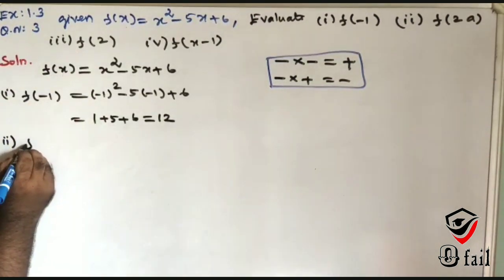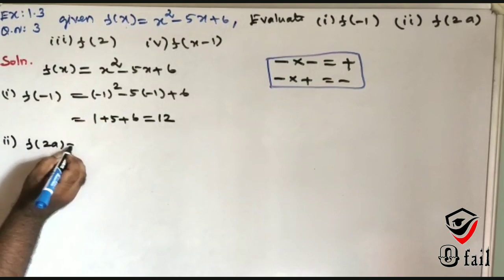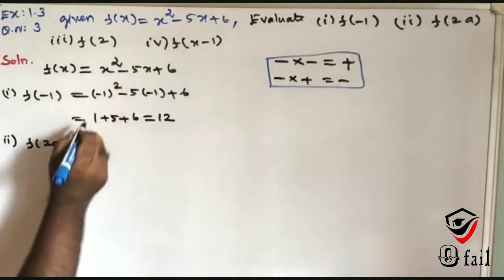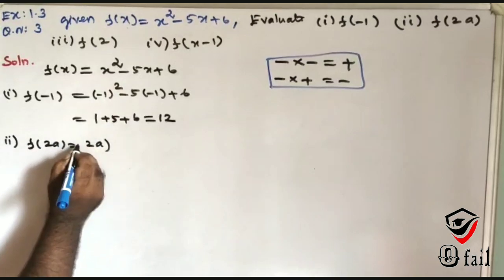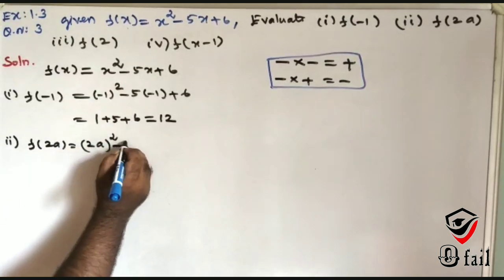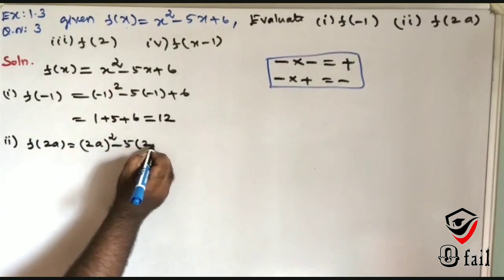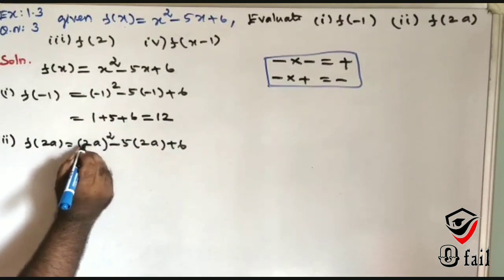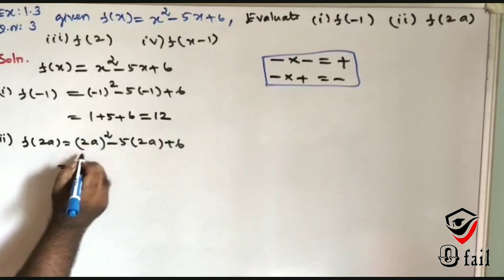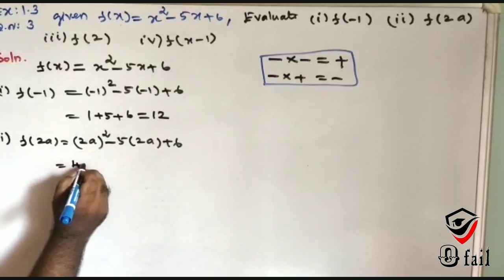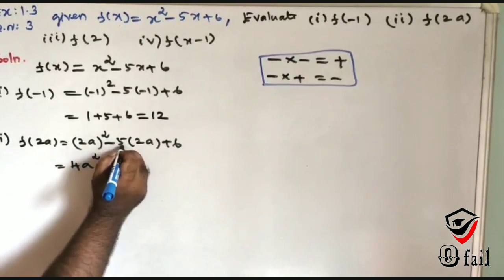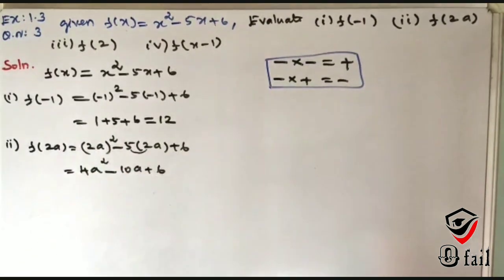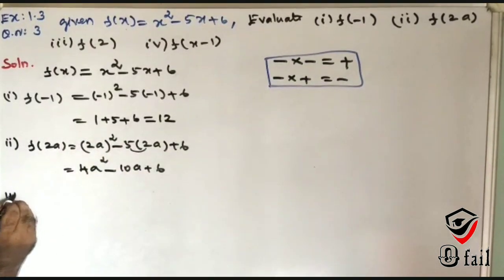Second problem: F of 2A. This means X is replaced by 2A. So we get 2A whole squared minus 5 into 2A plus 6, which equals 4A squared minus 10A plus 6. This is a simple concept.